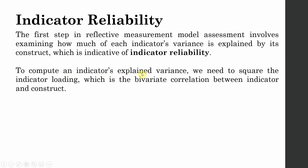To compute an indicator's explained variance, we need to square the indicator loading, which is the bivariate correlation between an indicator and the construct. To get your indicator reliability, you simply take the square of your loading. The loading tells you how well a particular item is representing the underlying construct, and it is the bivariate correlation between the indicator and the construct.